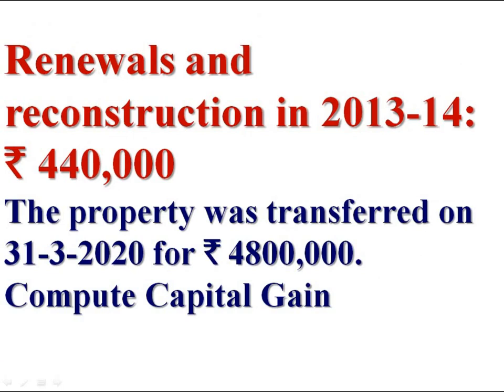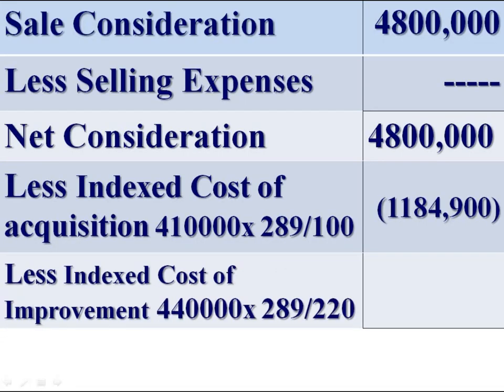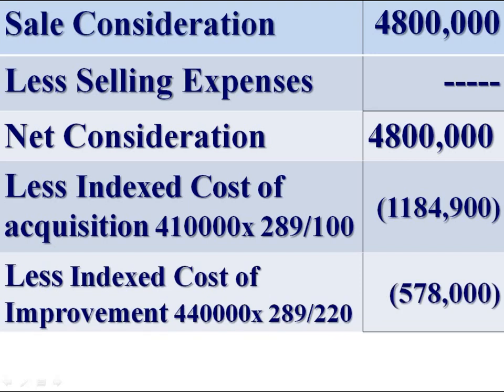Renewals and reconstruction in 2013-14 amounted to rupees 4 lakh 40,000. This is a cost of improvement during 2013-14. We have to calculate the indexed cost of improvement: rupees 4 lakh 40,000 multiplied by the index for the year 2019-20 divided by the index for the previous year 2013-14.